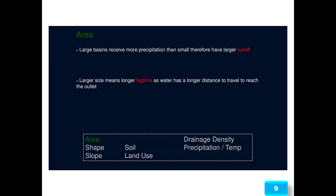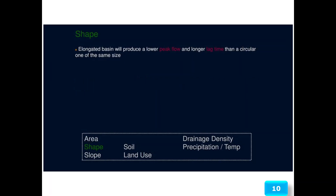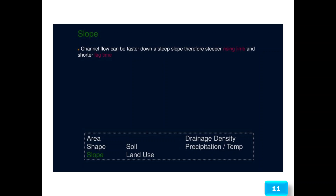Larger basins receive more precipitation than small ones and therefore have larger runoff. The larger size also means a longer lag time, as water has a longer distance to travel to reach the outlet. Regarding shape, an elongated basin produces a lower peak flow and longer lag time than a circular basin of the same size.